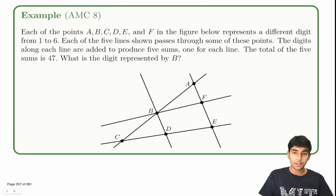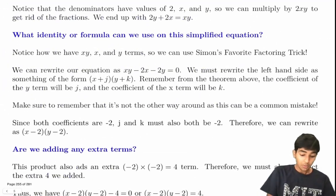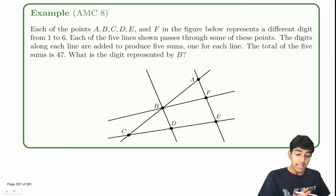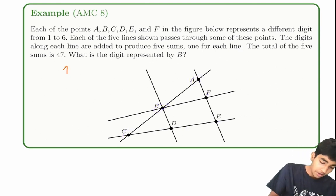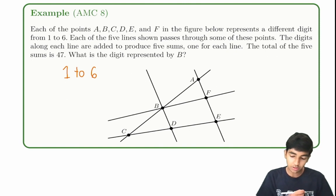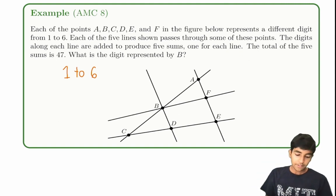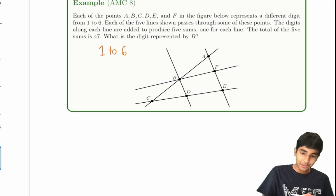Here's a cool algebraic number theory problem. Each of the points A, B, C, D, E, and F represents a different digit from 1 to 6. Each of the five lines shown passes through some of these points. The digits along each line are added to produce five sums, one for each line. The total of the five sums is 47. What is B? Let's write out each of these sums — and thankfully, we can color-code them.